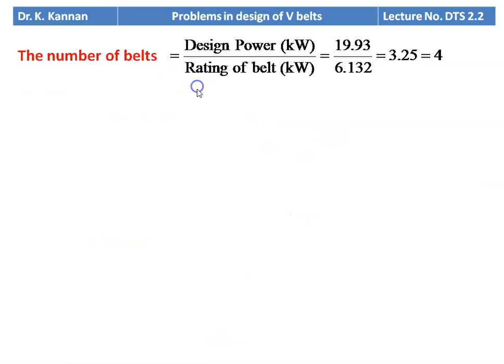Number of belts = design power / power rating = 19.93 / 6.132 = 3.25, rounded up to 4. If we take the smaller cross section B, the number of belts may increase, which would increase the width and weight of the pulley. To minimize the number of belts, we use the next higher cross section.